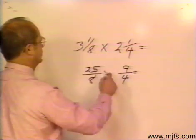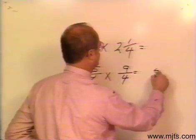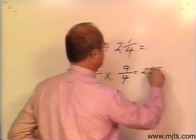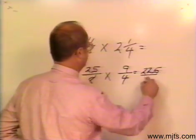Multiply across the top I would have 225 over 32.